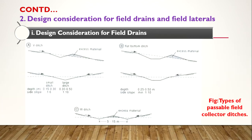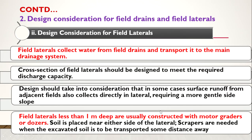Here you can see the cross-section of field drains. The V-ditch should be in a V cross-section most of the time. Sometimes it can be given a flat bottom or trapezoidal shape. It can also be of W-shape. The water will be flowing through this ditch. These are the field drains.